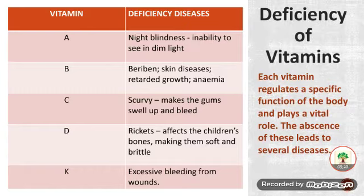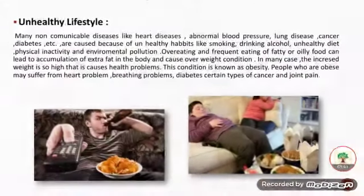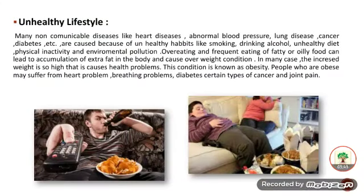Vitamin C causes scurvy, which makes the gums swell up and bleed — you can also relate this to the sensitivity shown in toothpaste advertisements. Vitamin D causes rickets, which affects children's bones, making them soft and brittle. Vitamin K deficiency leads to excessive bleeding from wounds. Like this, people are prone to get diseases from vitamin deficiencies.